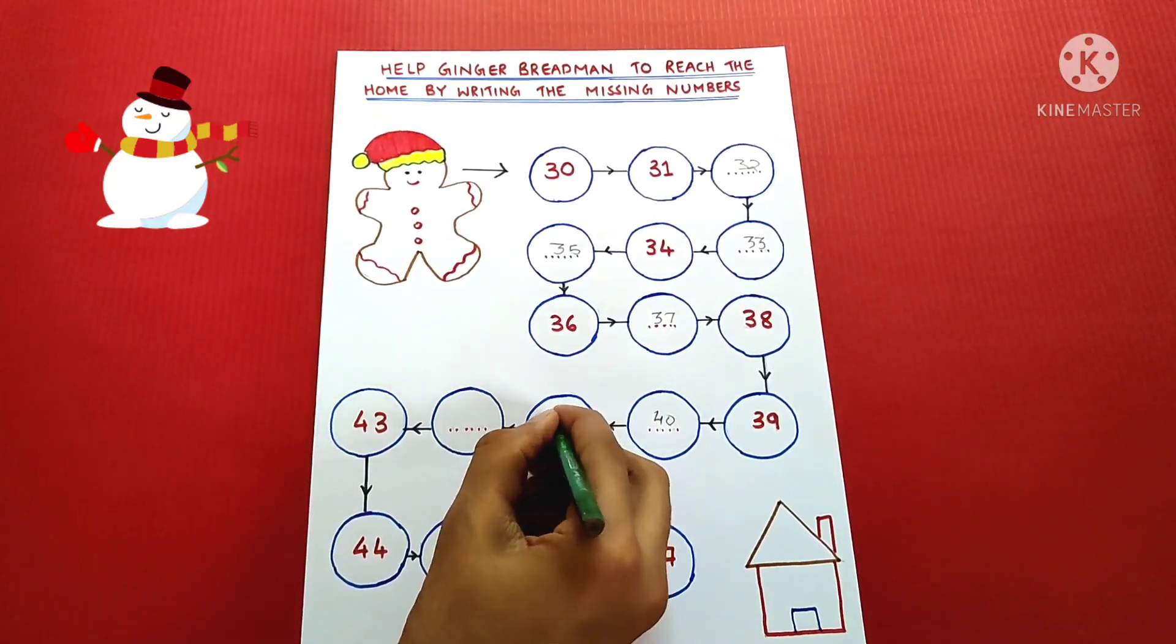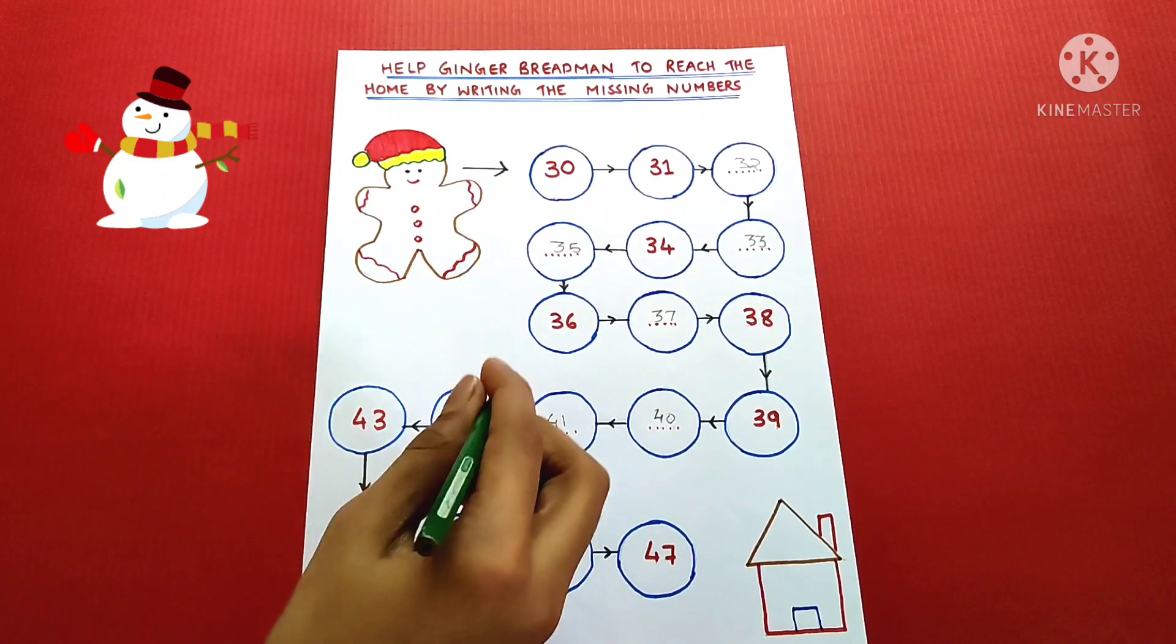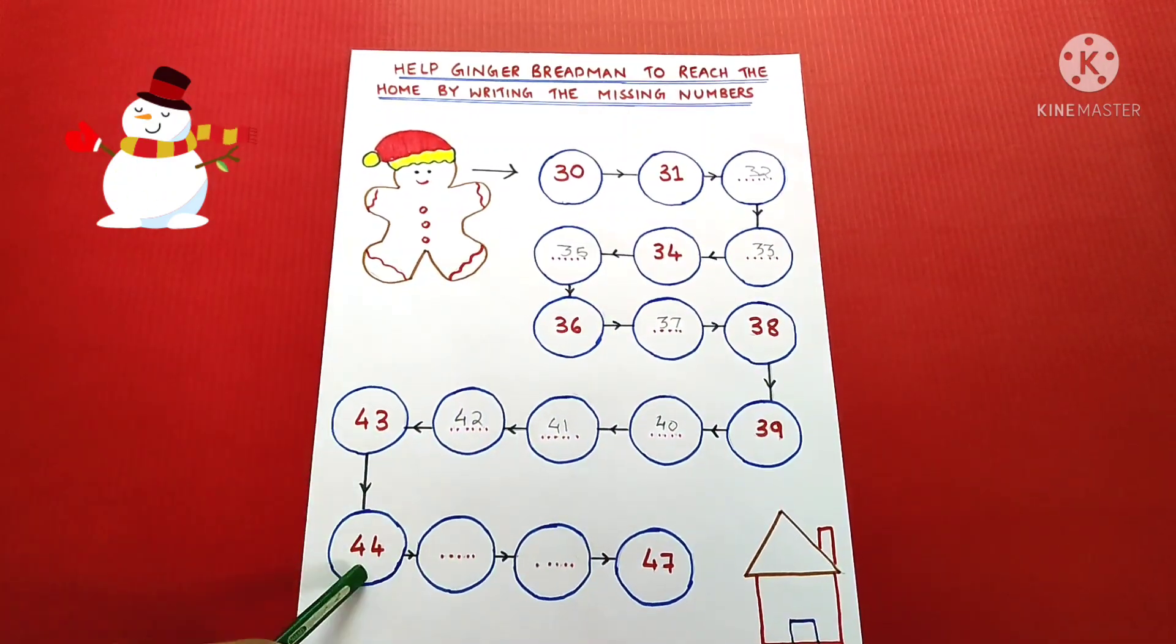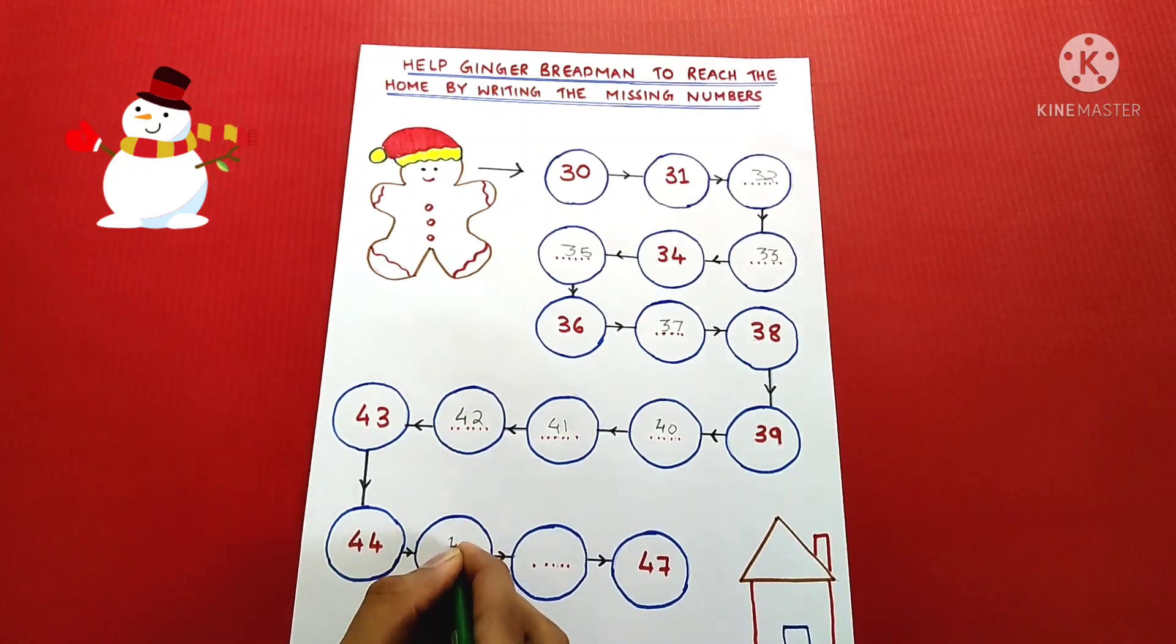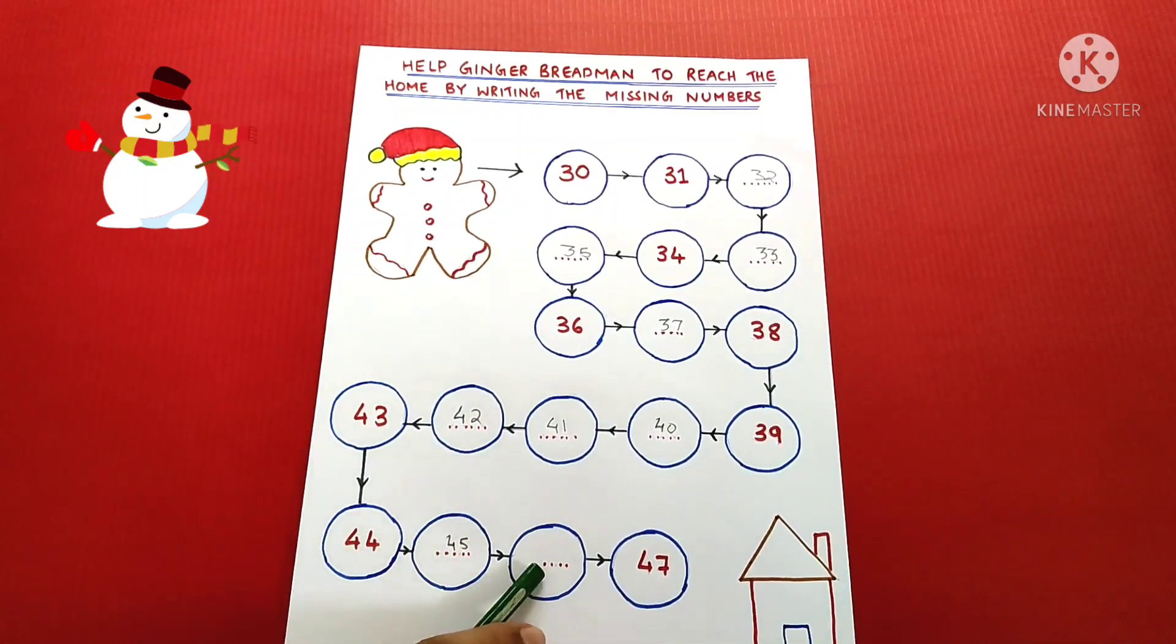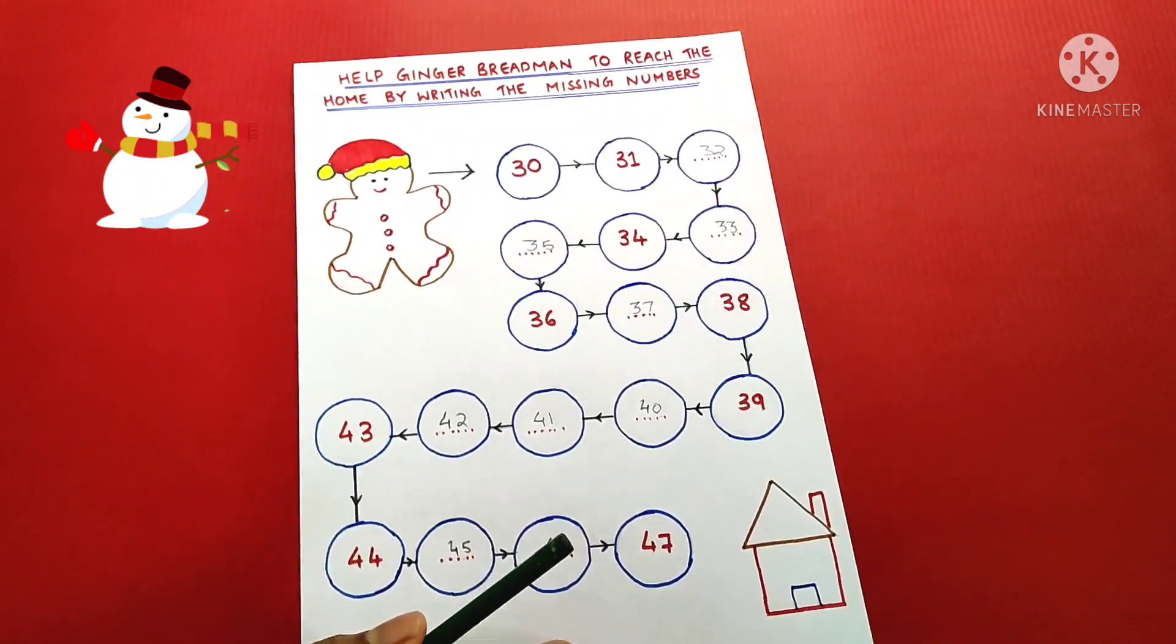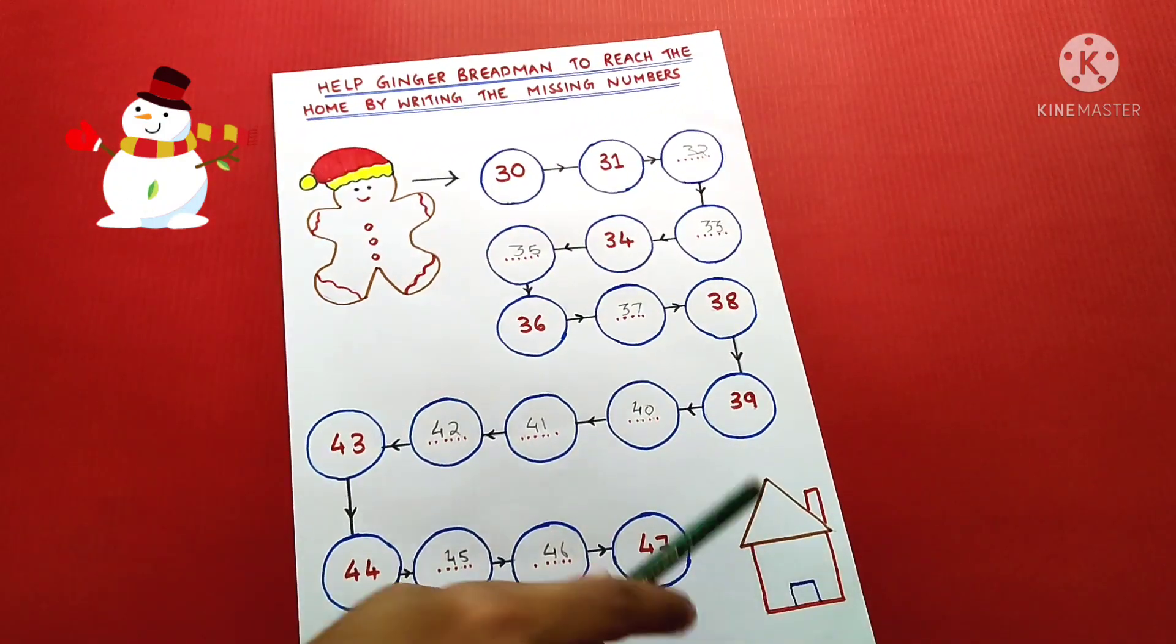41, 42, 43, 44, 45, 46, 47. The gingerbread man has reached his house.